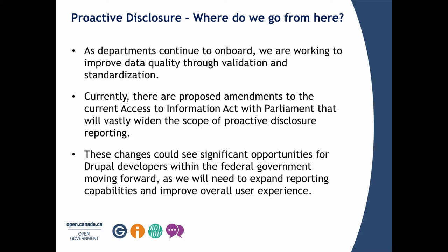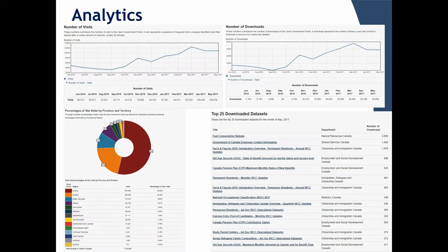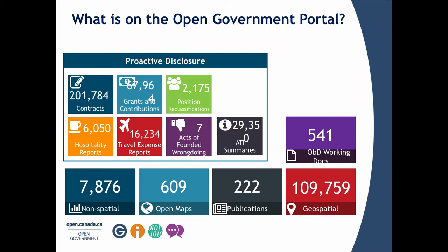On the open government portal we feature our analytics publicly — anyone can see what information is out there and how people are using it. Currently we're only reporting on a limited amount manually, with our dev team populating a spreadsheet, but as we move to Drupal 8 we hope to automate this. We have hundreds of thousands of records on the portal, and proactive disclosure is a huge portion. You can see 540 open-by-default working documents highlighted in purple.